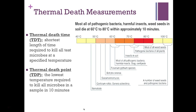We have two thermal death measurements. Thermal death time (TDT) is the shortest length of time required to kill all test microbes at a specified temperature. Thermal death point (TDP) is the lowest temperature needed to kill all microorganisms in a sample in 10 minutes. A chart shows the different types of microorganisms and the temperatures at which they can be killed.